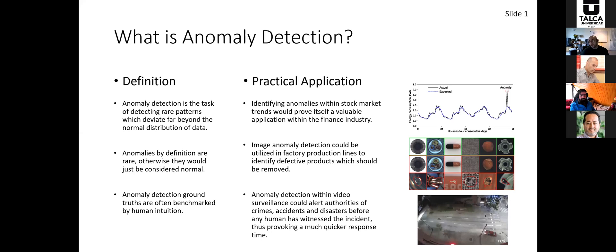Video anomaly detection can also play a very valuable role for public safety. Throughout all the CCTV cameras around a city, most footage is normal and we're only looking for a few precious seconds of an anomaly. Getting a human to sit and watch several hours is not particularly helpful, but software that could detect those precious seconds at all times would allow authorities to provide a quicker response.